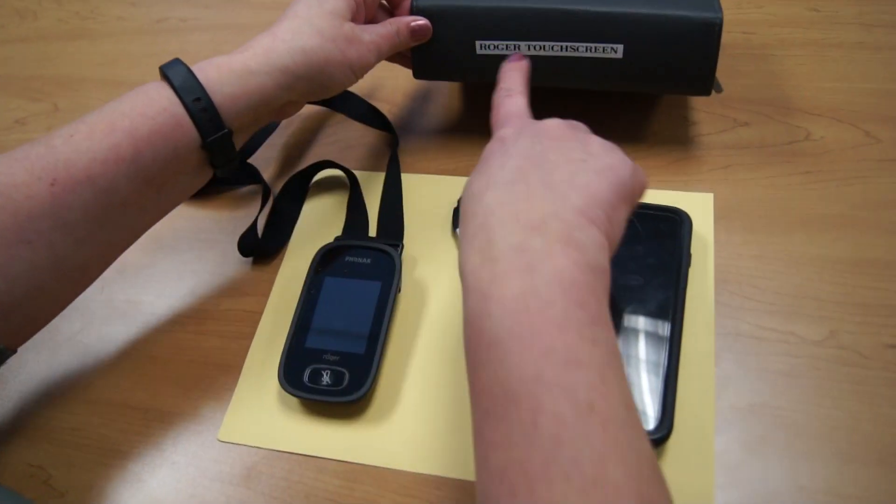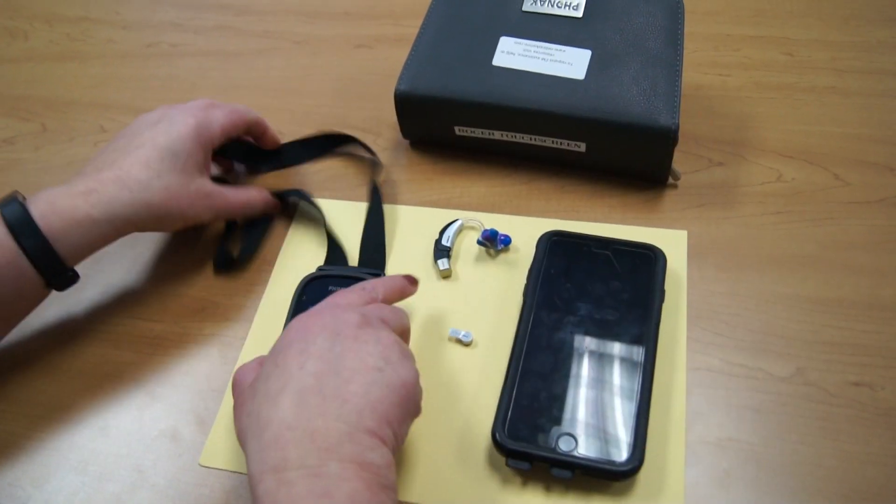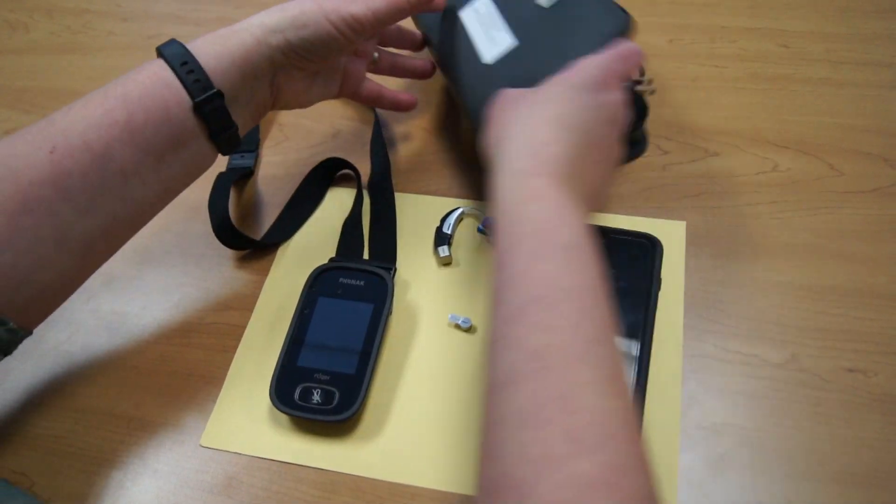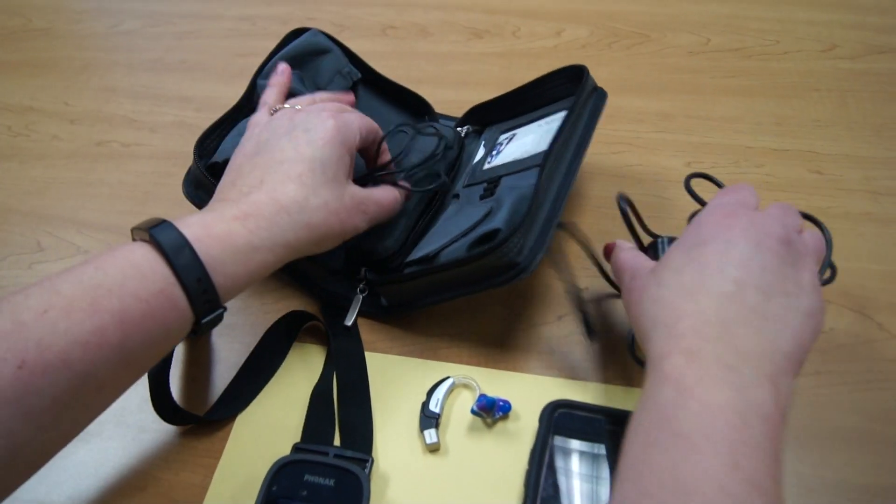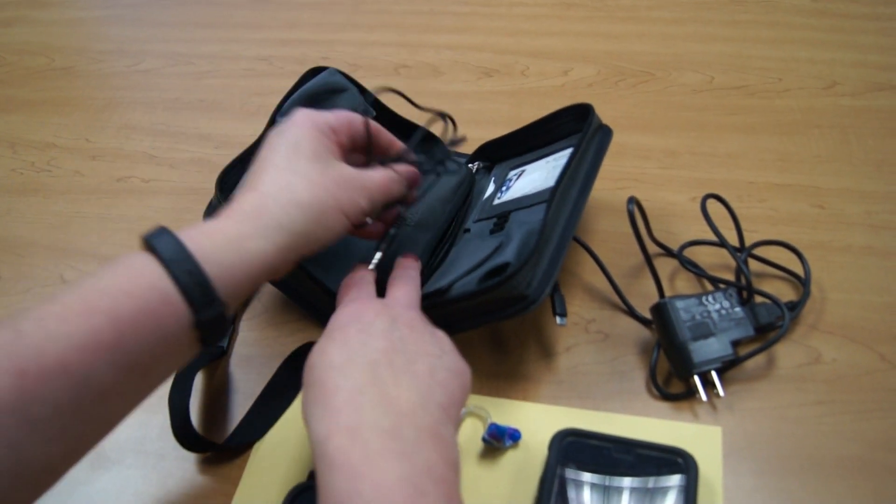In this video, we'll be doing the training of the Roger touchscreen. In your case, you'll have your transmitter, your charger, and in the center, your audio cord.